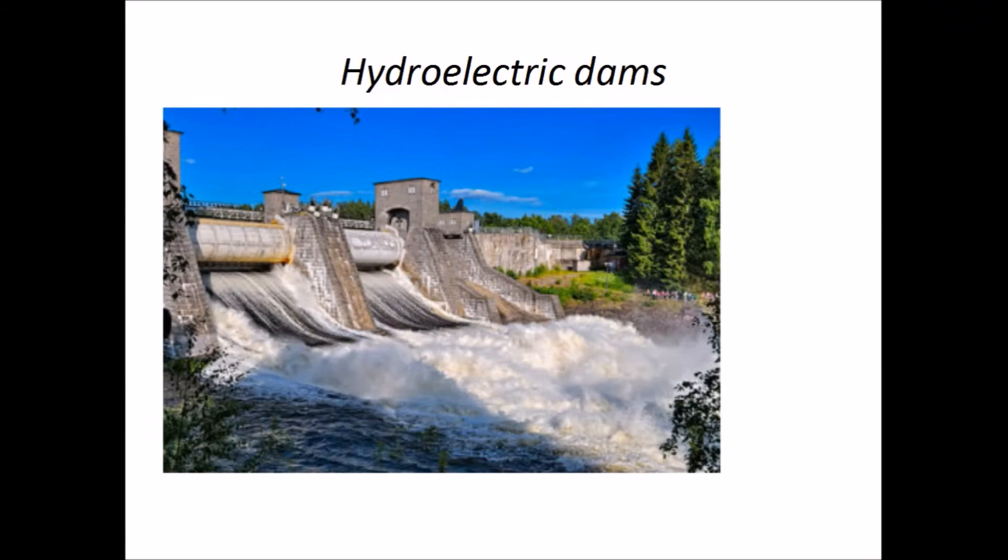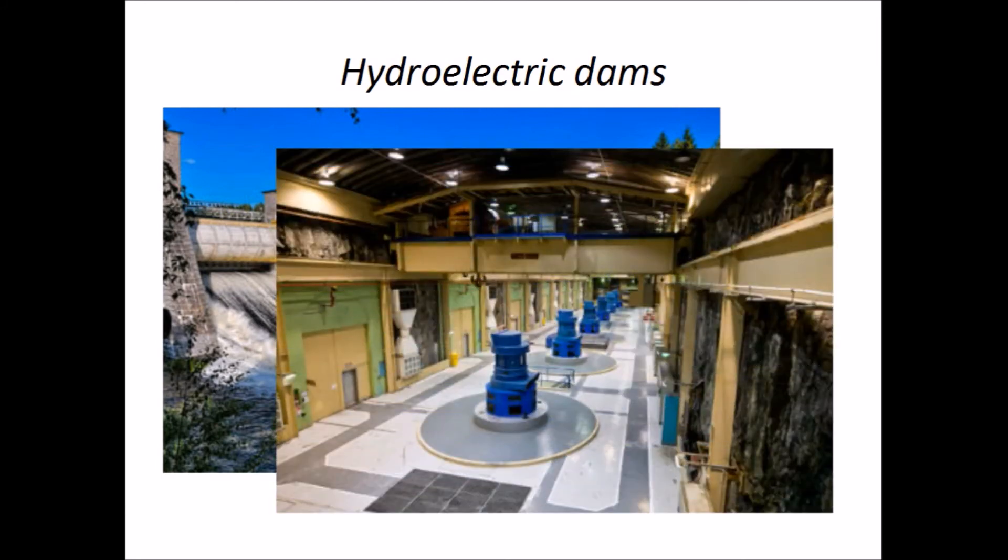Hydroelectric dams, for example, contain huge magnets inside wire coils. When water flows through the dam, it pushes on turbine blades that make the magnet spin. What comes out is clean power.